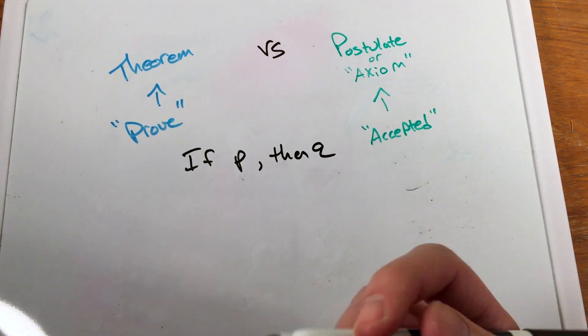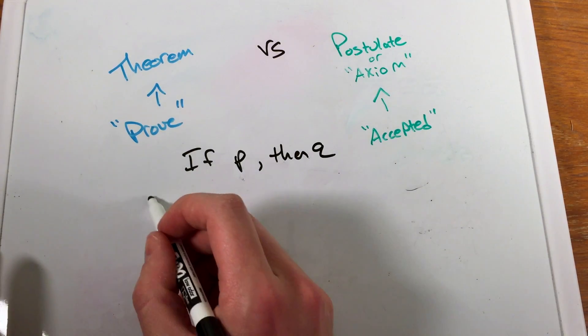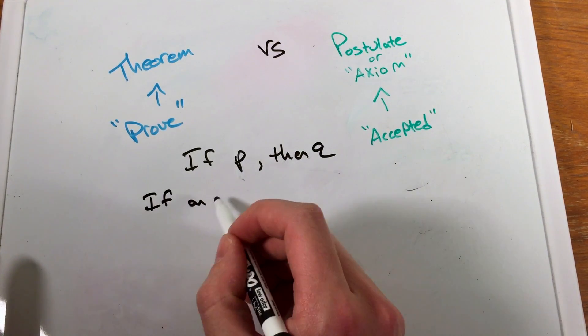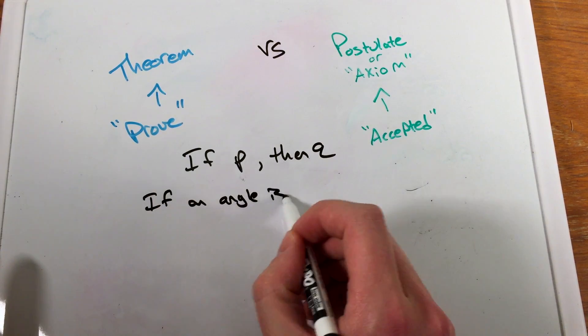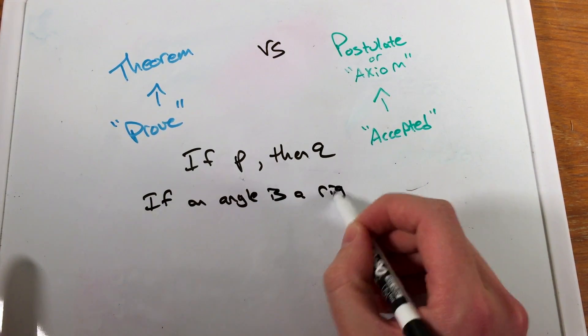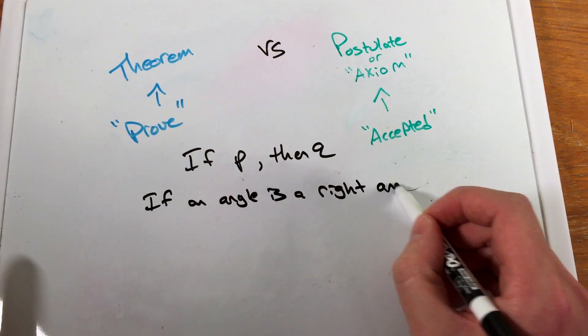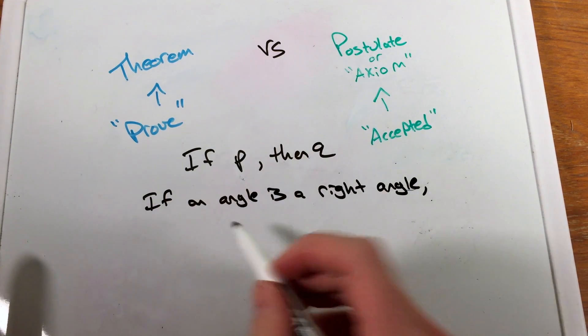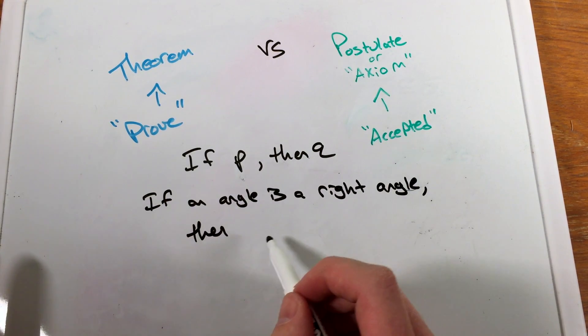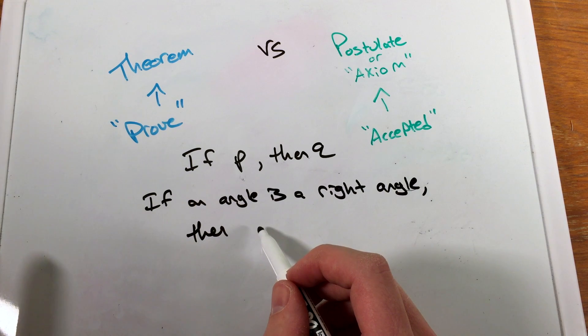So, for example, we can use a conditional statement that's a true statement, like, if an angle is a right angle,